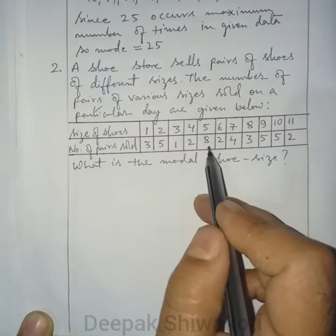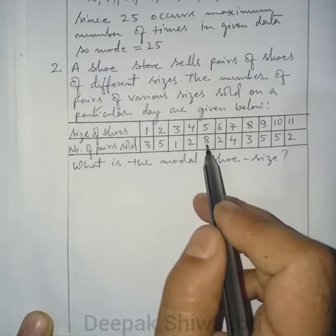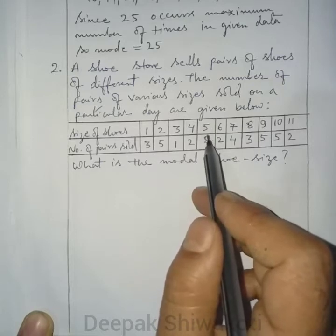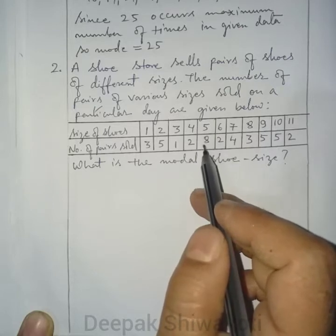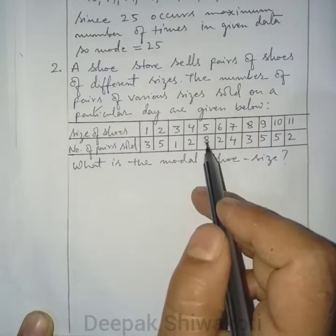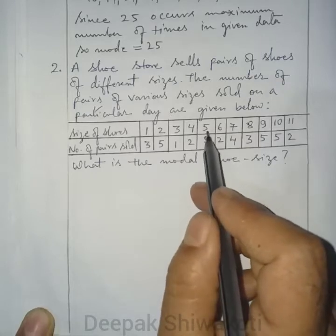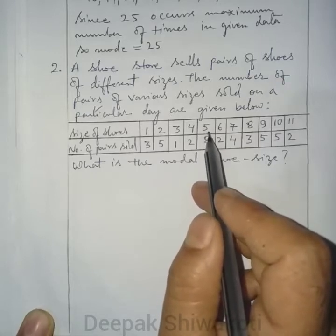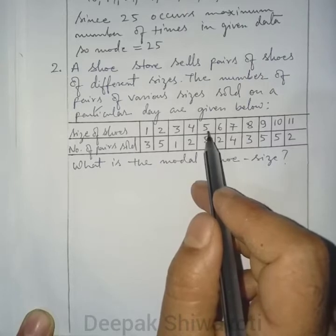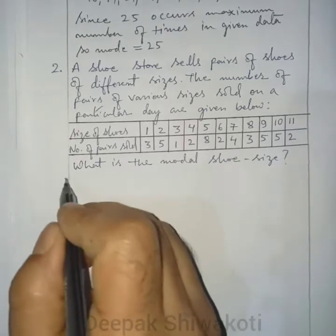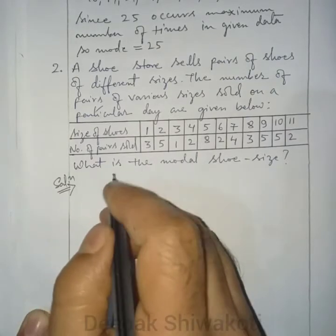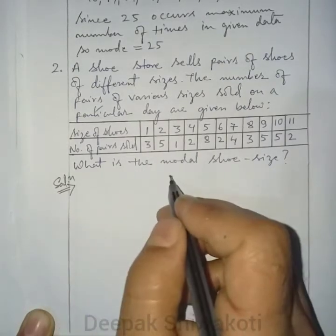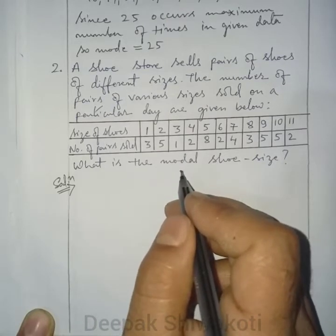8 is the maximum number of pairs sold, and the corresponding shoe size is 5. So, size 5 shoes are sold in the maximum number of pairs. The mode is 5. From the given frequency distribution, it is clear that the maximum number of pairs sold is 8, which corresponds to shoe size 5.